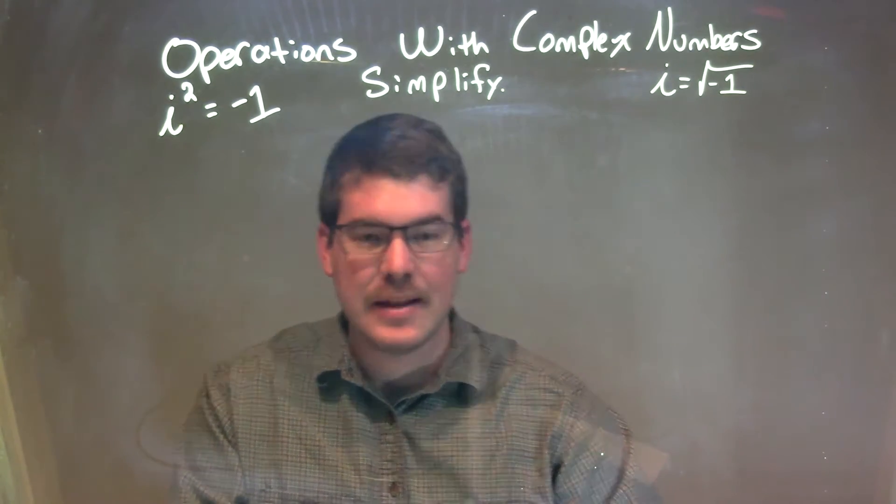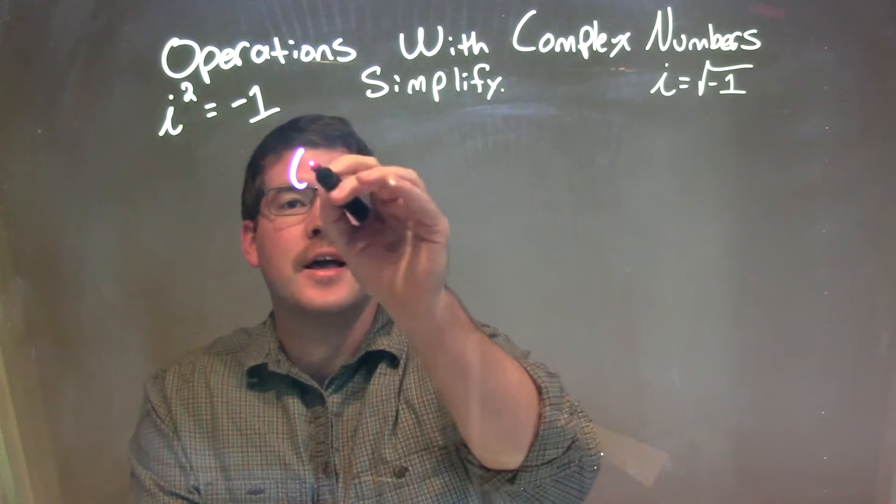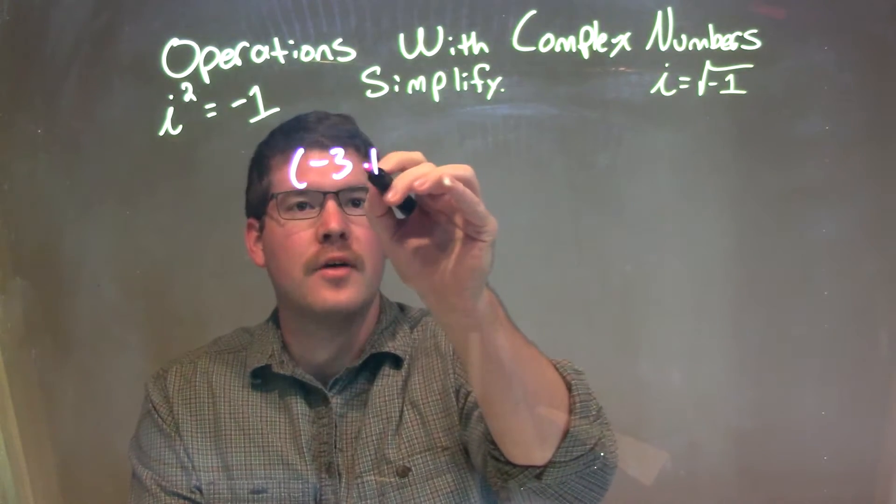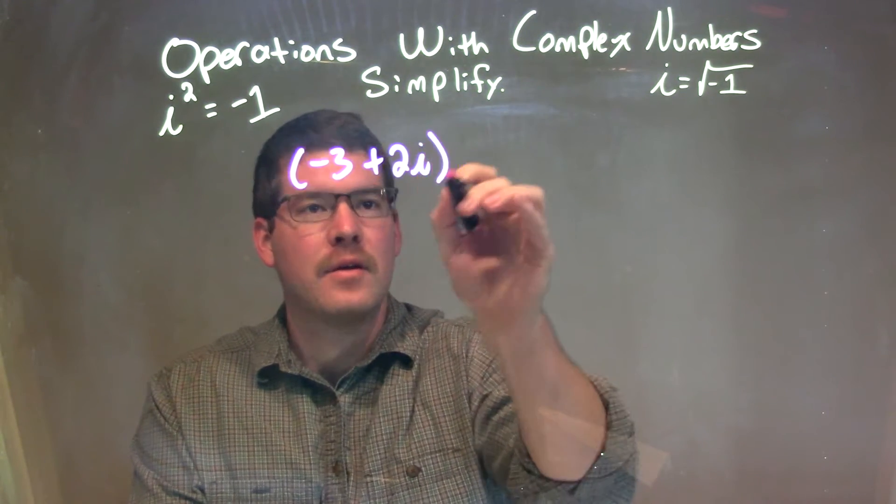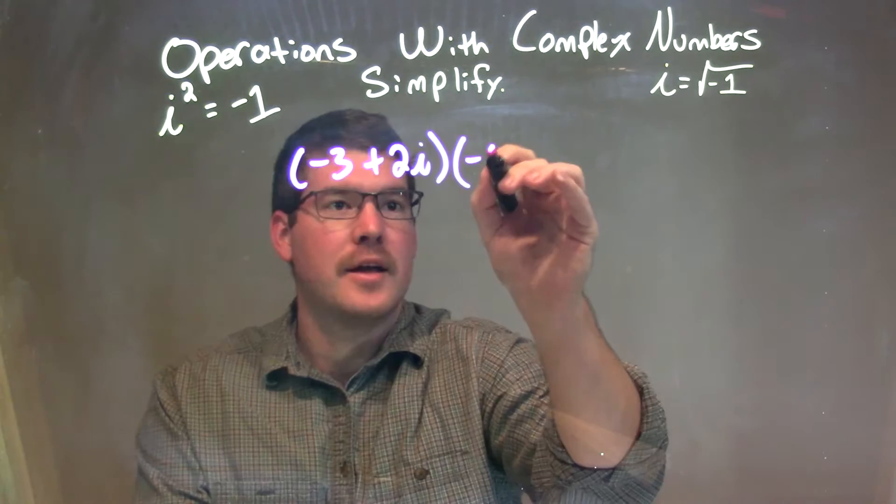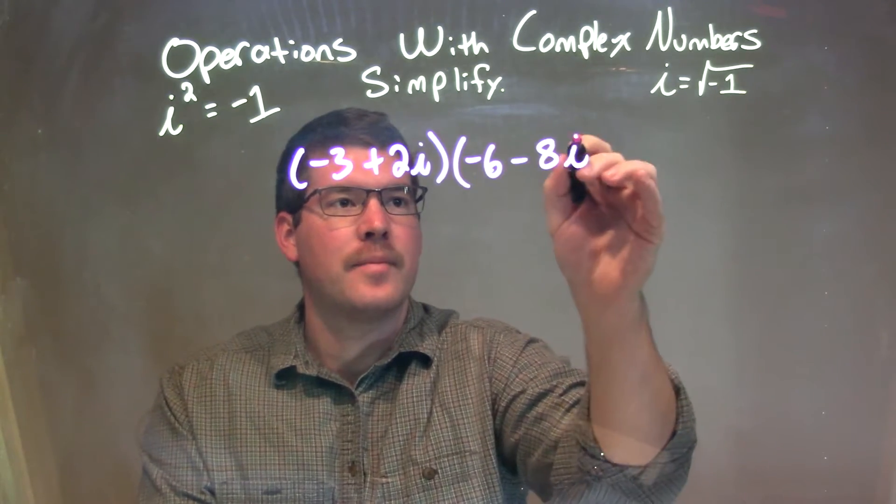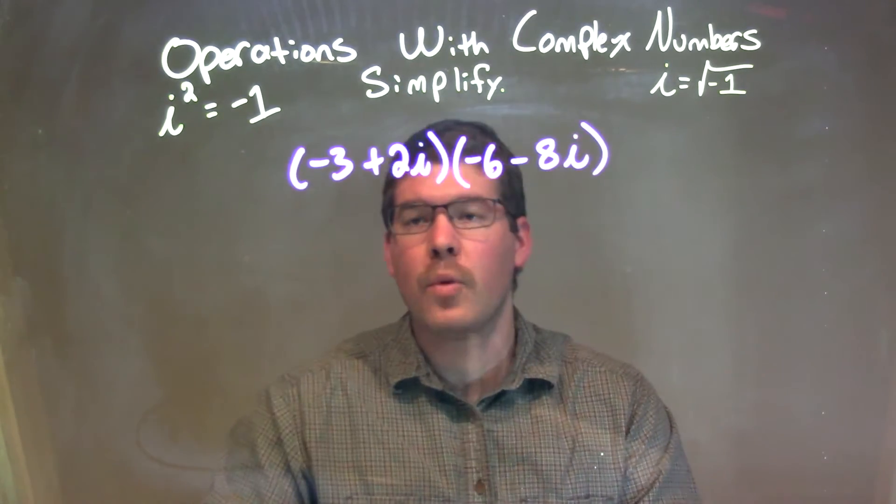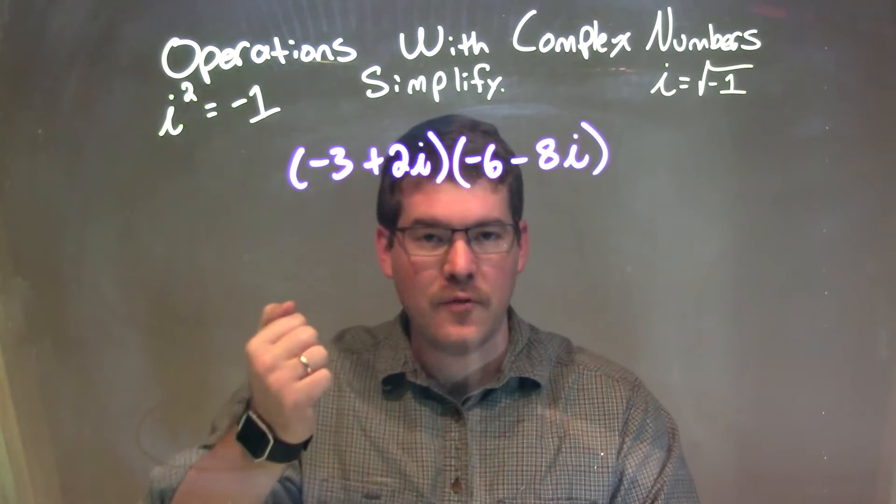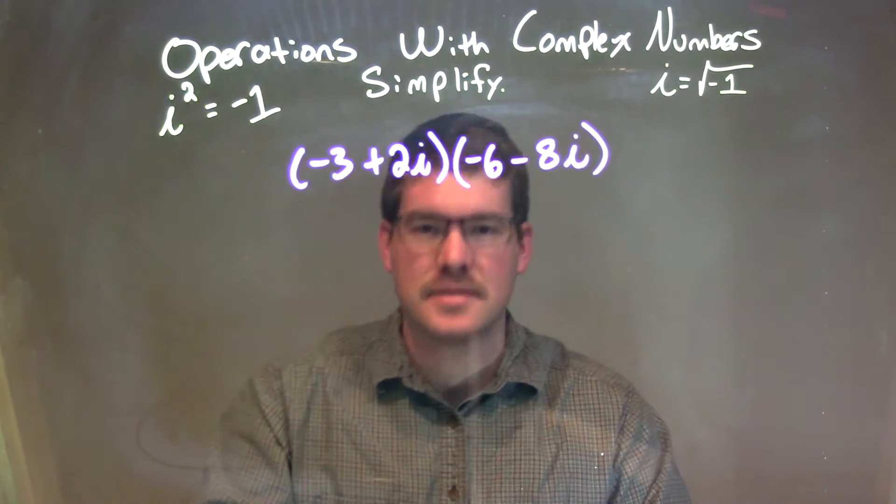So, if I was given this: negative 3 plus 2i times negative 6 minus 8i, what I want to do is multiply all parts of my first parenthesis by all parts of my second parenthesis.